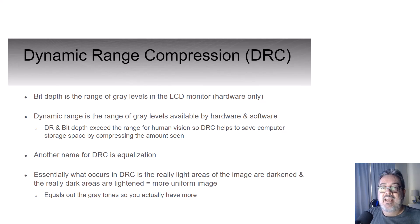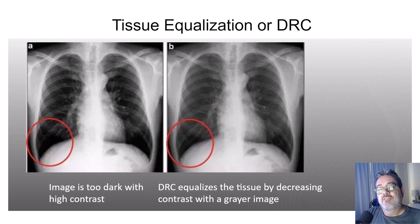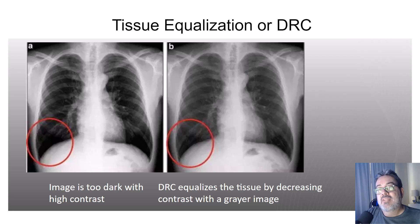Essentially, the light areas of the image are darkened just a bit, and the dark areas are lightened a bit to make a more uniform image, giving you more gray. Looking at the image on the left, it's pretty black and white — or high contrast — to the point where you can't visualize the lung detail in the right costophrenic angle. After tissue equalization, or DRC, it lightens the really dark pixels and allows you to see a wider range of tissue densities within the same image.